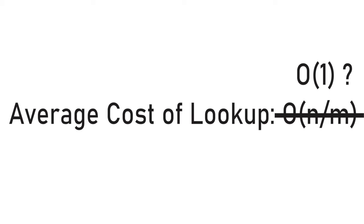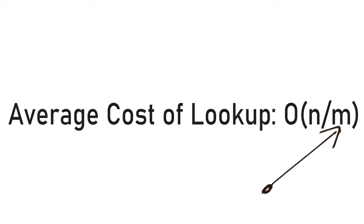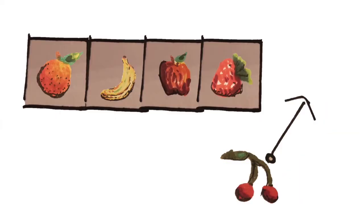So, in general, the average cost of lookup is O(n over m). Wait, but didn't we want to lookup in O(1)? The table size of a hash table is important. Earlier, we decided we needed to be able to add more fruit as our business expanded.